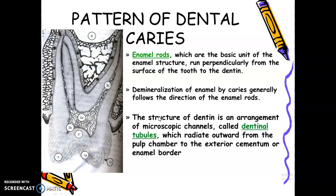So the normal structure plus the abnormal structure — the pattern of dental decay — follows the direction of the enamel rods. The structure of dentine is an arrangement of microscopic channels called dentinal tubules, which radiate outward from the pulp chamber to the exterior cementum or enamel border.